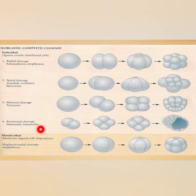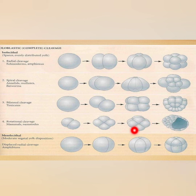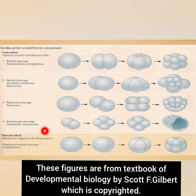In rotational cleavage, the first cleavage is a normal meridional division — the cleavage furrow passes through the center of the animal-vegetal axis and bisects both poles of the egg. The second cleavage differs: one of the two blastomeres divides meridionally and the other divides equatorially. Examples for rotational cleavage are mammals and nematodes.